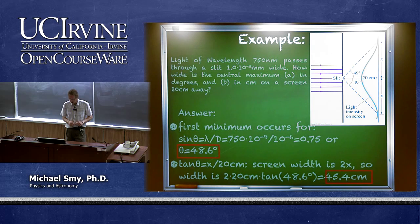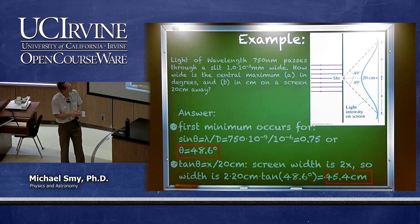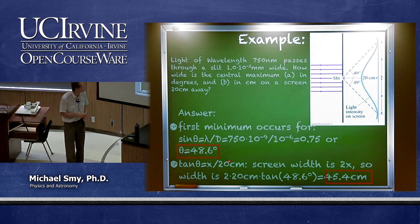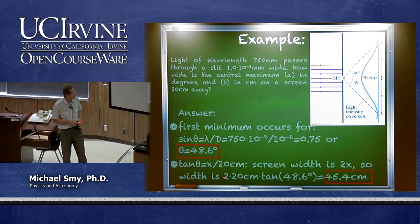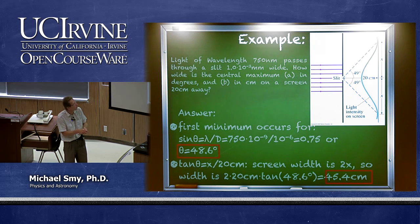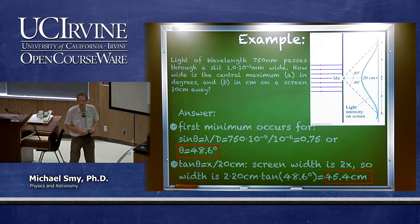Now that we have the angle of roughly 49 degrees, the tangent of this angle equals x divided by 20 centimeters, where x is the distance from the center to the first minimum on the screen. So x equals 20 centimeters times the tangent of this angle. The central maximum is 2x wide — since we counted from the middle to the first minimum — giving a total width of 45.4 centimeters.